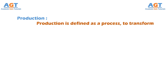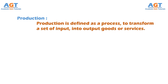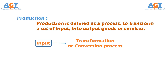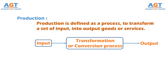Production is defined as a process to transform a set of inputs into output goods or services. Simply put, a production system takes input, runs a transformation or conversion process on the inputs, and finally gives outputs in the form of goods or services.